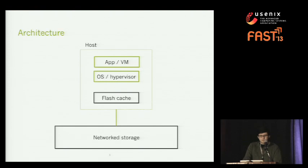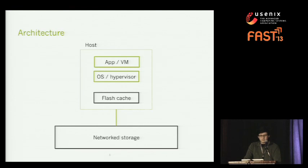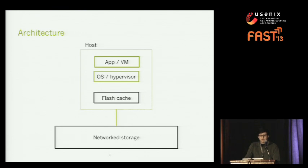Before we start and to put things into context, this is the architecture we are referring to. We have an application on top of a VM using an OS or a hypervisor, in a single host with a locally attached flash, all connected to network storage. In this paper we assume that LUNs are not shared by more than a single host, and we only assume failures on the host, not at the network storage site.